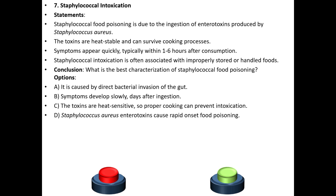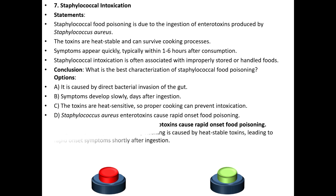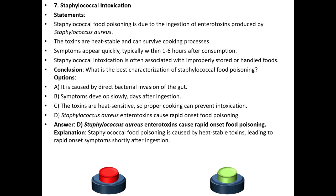Conclusion: What is the best characterization of staphylococcal food poisoning? Option A: It is caused by direct bacterial invasion of the gut. Option B: Symptoms develop slowly, days after ingestion. Option C: The toxins are heat-sensitive so proper cooking can prevent intoxication. Option D: Staphylococcus aureus enterotoxins cause rapid-onset food poisoning. The answer is D. Explanation: Staphylococcal food poisoning is caused by heat-stable toxins leading to rapid-onset symptoms shortly after ingestion.